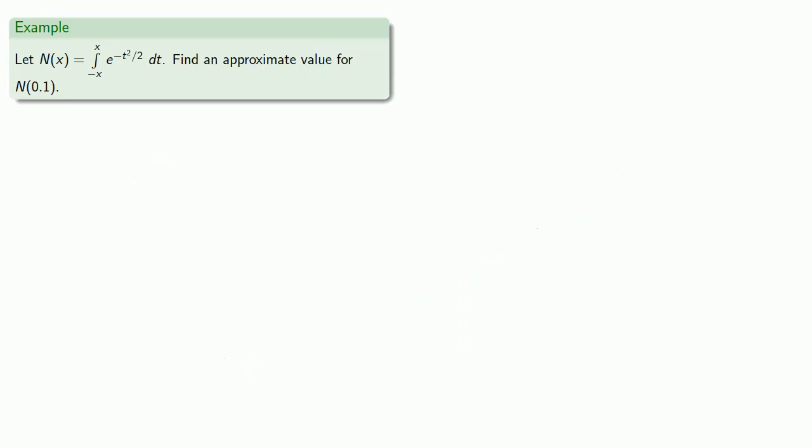Well, let's see if we can find some actual function values. How about approximating n of 0.1? Again, it's worth emphasizing that you can try all you want. You will not find an antiderivative of e to the minus t squared over 2 among the familiar functions. Nevertheless, we can still approximate n of 0.1.